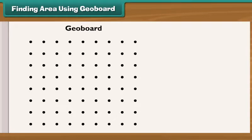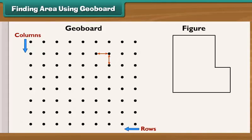A geoboard is created by placing dots in rows and columns. The distance between any two adjacent dots should be the same. Let's learn to calculate the area of the given figure using a geoboard.